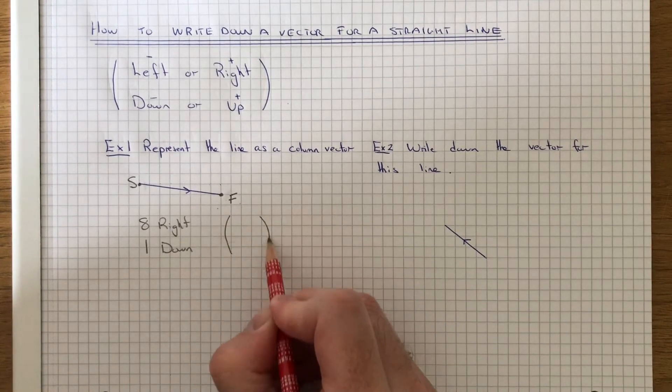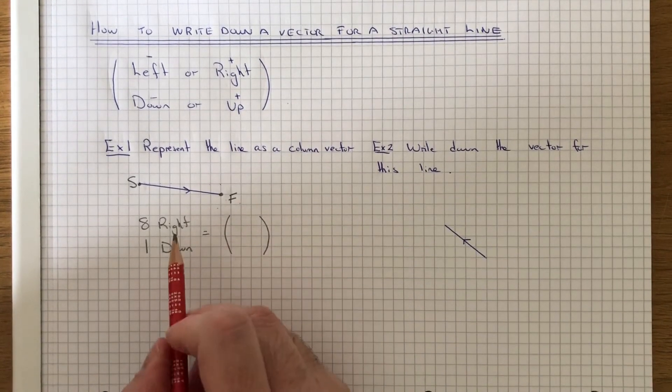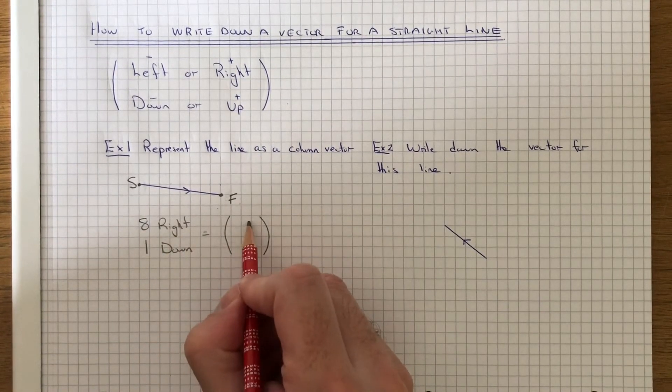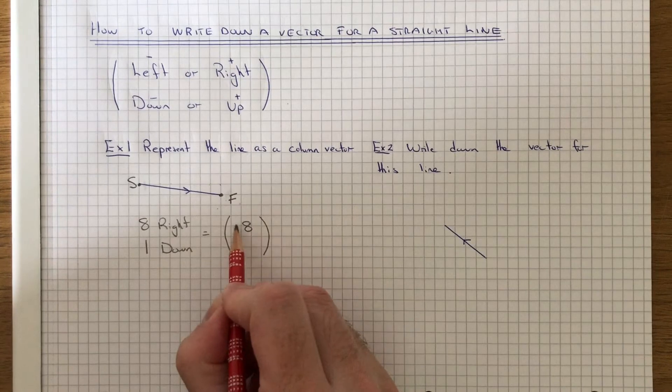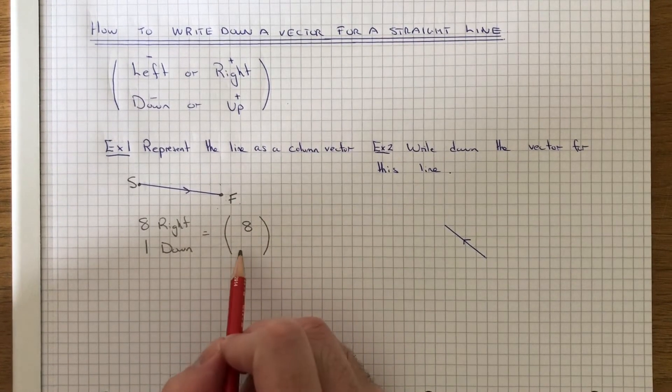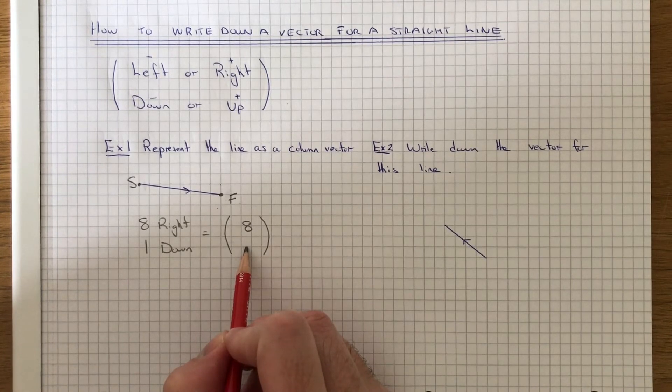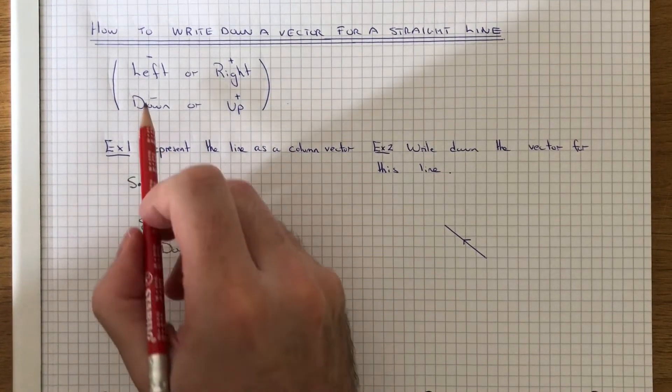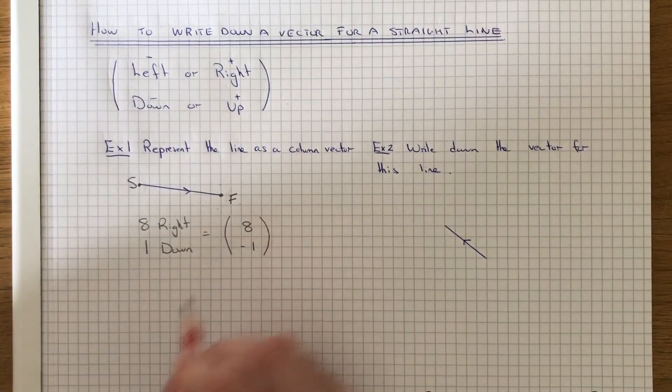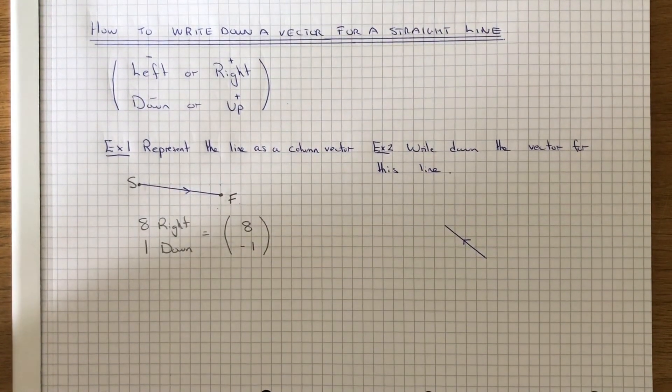So to write this as a column vector then, the number going across goes at the top. So it was 8 right, so that's positive 8 because it was to the right. The bottom number goes here. So this was 1 down. So since it's down, we need to put minus 1. And that's our column vector for the line.